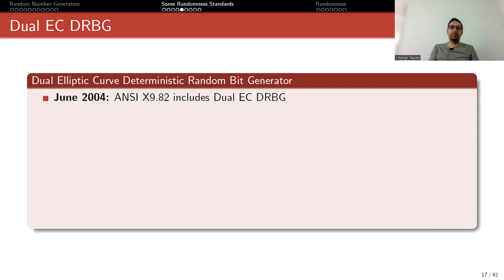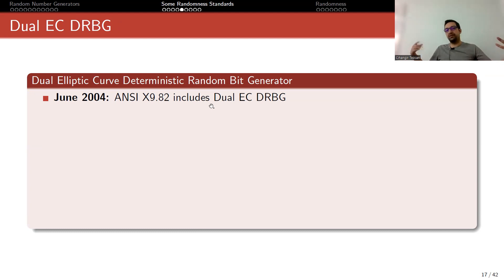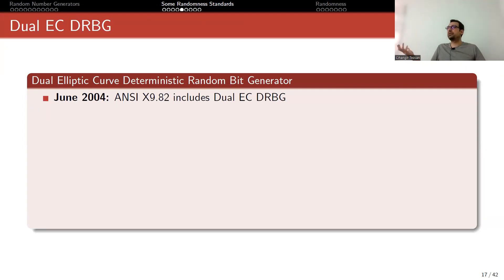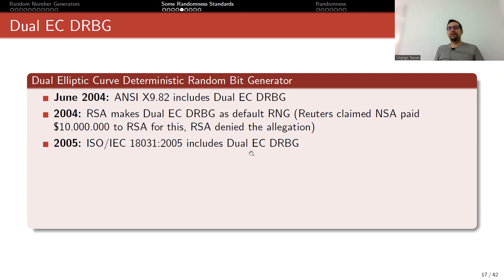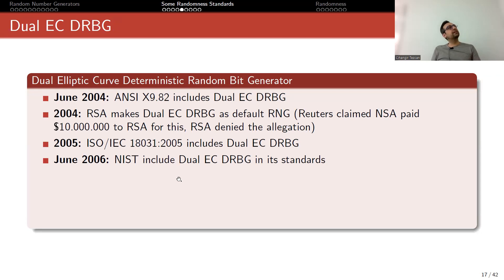Let me talk about a bad example — a standard that is badly broken — named the Dual Elliptic Curve Deterministic Random Bit Generator, or Dual EC DRBG. The elliptic curve is used twice: you perform operations on the points of the elliptic curve, then the result is hashed and used as a random number. It is a little bit slow compared to other random number generators. It first appeared in ANSI documents, then RSA made it their default random number generator. Reuters claimed NSA paid money to RSA to do this, though RSA denied this allegation. Later in 2005, ISO included it in their standards, and finally NIST included it as well.